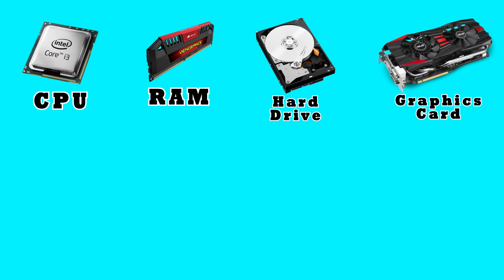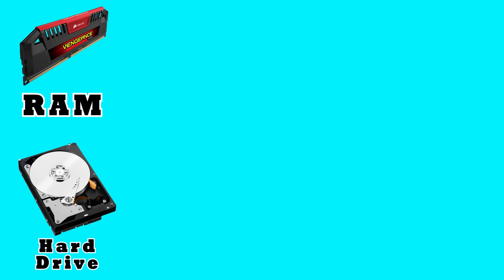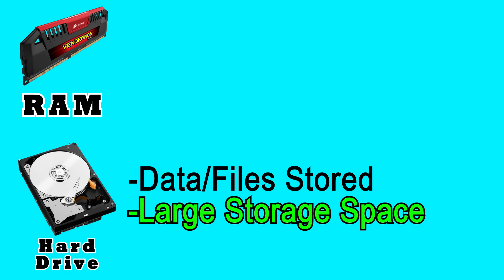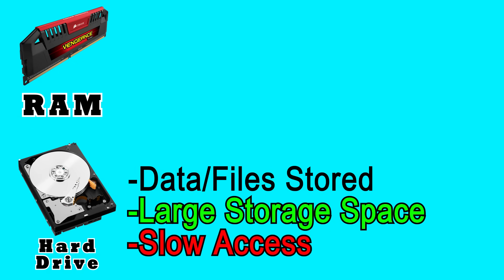Now let's talk about RAM and hard drive at the same time, because they have a very unique relationship, which is probably why people often confuse the two. Your hard drive is where all of your data is stored. When your computer tells you you're running low on space, it's because your hard drive is almost full. All of the data that makes up your videos, pictures, documents, project files, or the 3D worlds and models that make up a game are all stored here. While hard drives can store lots of data, they're relatively bad at accessing that data quickly.